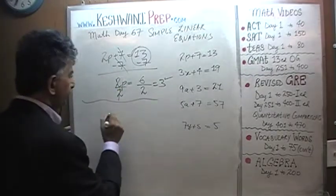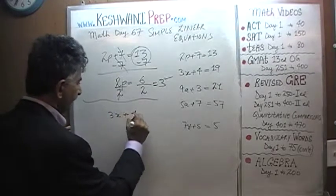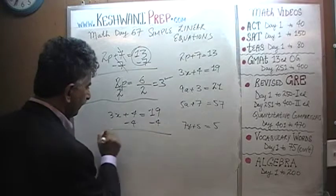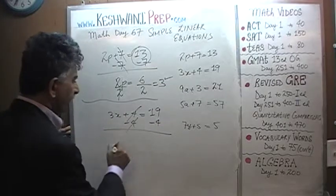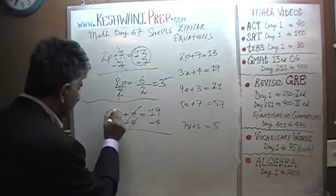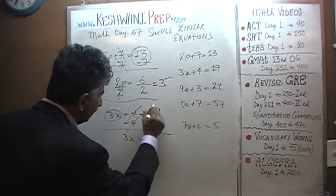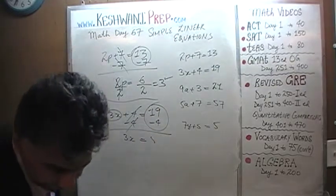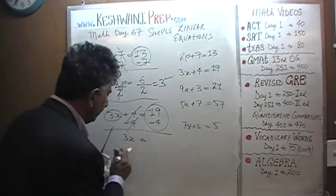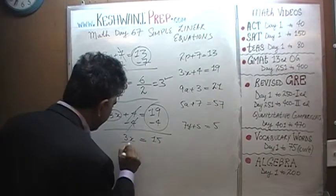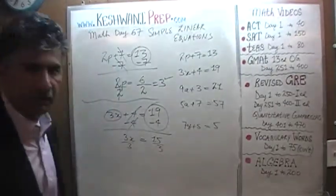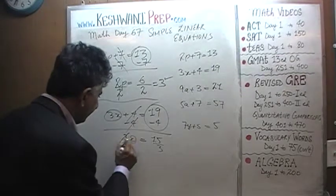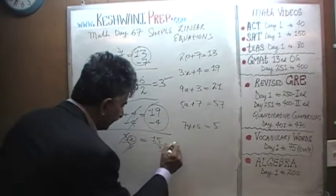Number 2: 3x plus 4 equals 19. Let's subtract 4 from both sides — that kills that 4. We end up with 3x equals 19 minus 4, which is 15. Divide both sides by 3. That knocks out this 3, and x equals 15 divided by 3, which is 5.